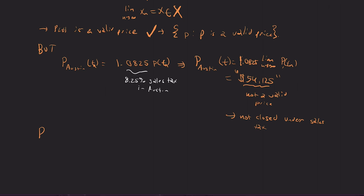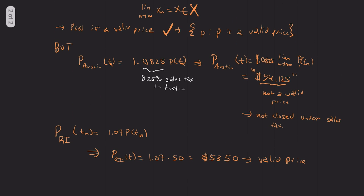But so we can see that for any given place in the United States, the sales tax might basically mess things up, and we're no longer in the set that we want to be in. But you can also end up with random coincidences. So I'm going to call P_Rhode Island(tn) to be 1.07 P(t, tn). In this case, P_Rhode Island(t) is the limit. This is 1.07 times 50, and this, 7% of 50, is 350. So this is $53.50, which is actually a valid price.